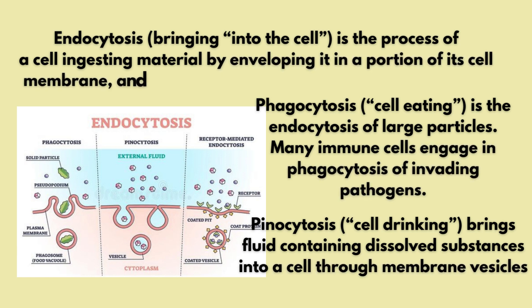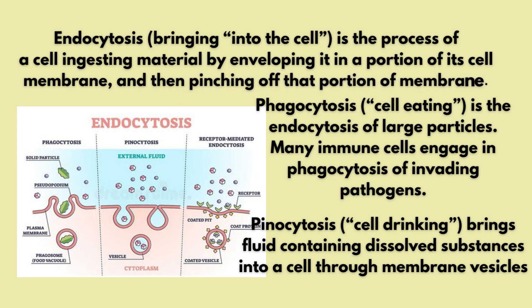The first type of endocytosis is phagocytosis, which is cell eating. In phagocytosis, there are larger particles, and the plasma membrane engulfs them, trapping them in a vacuole form. The next type is pinocytosis, which is cell drinking. In pinocytosis, substances dissolved in fluid are trapped by the cell membrane into a vesicle form.